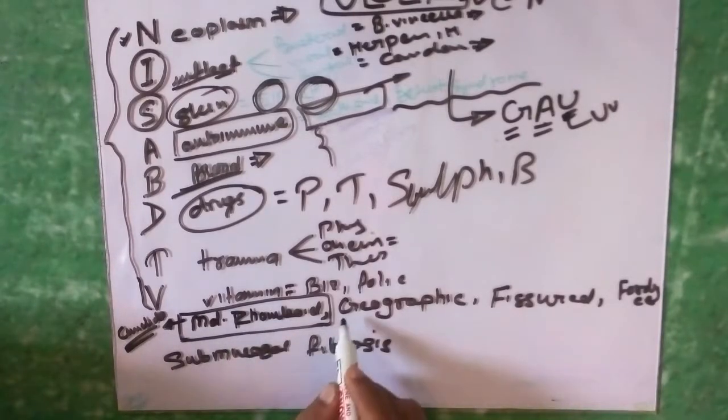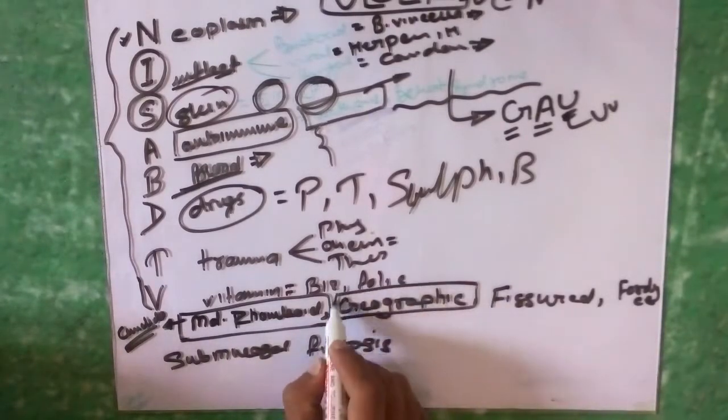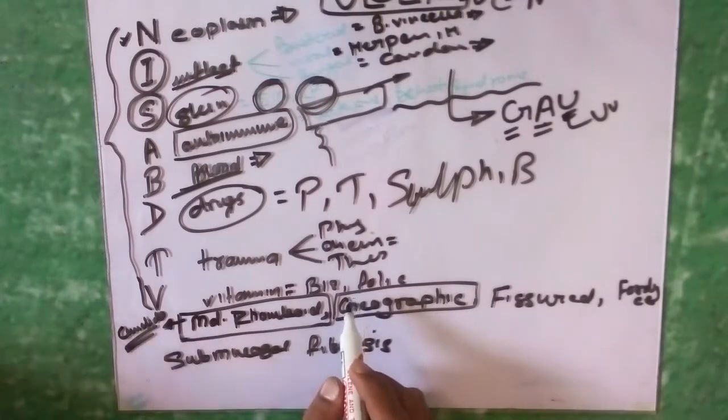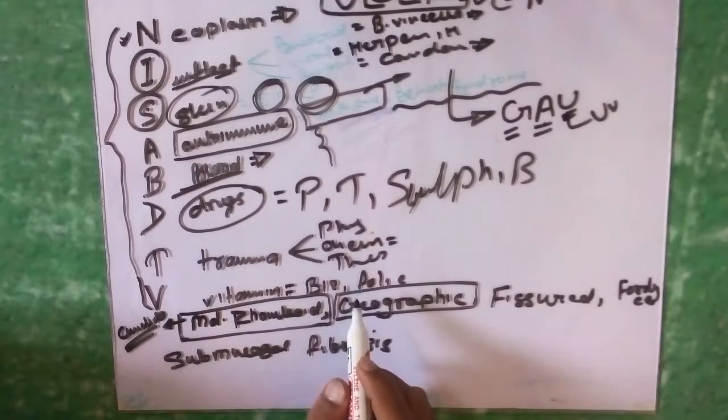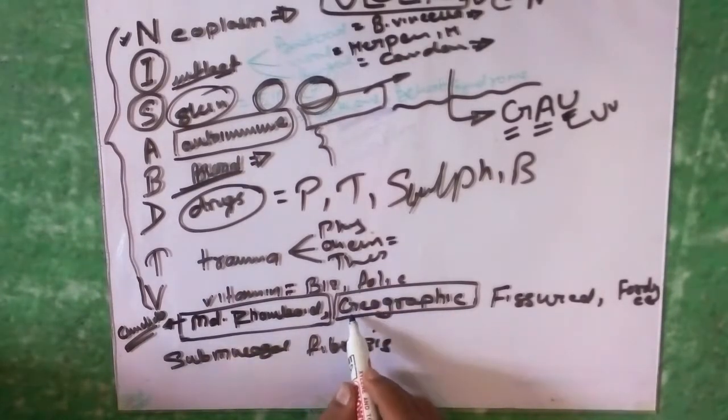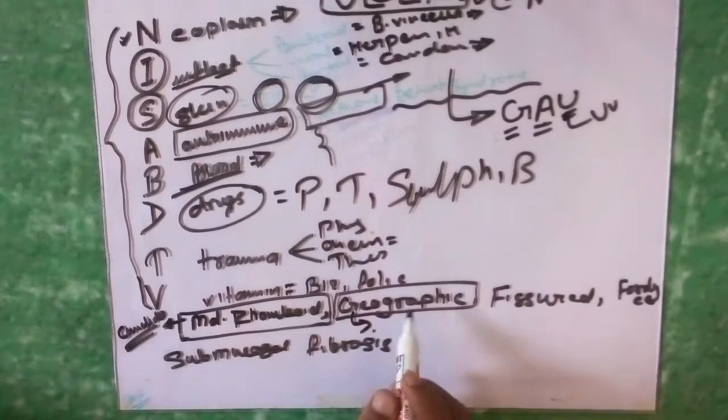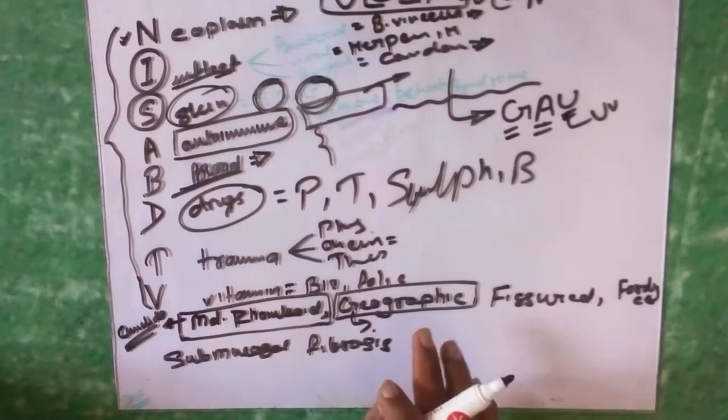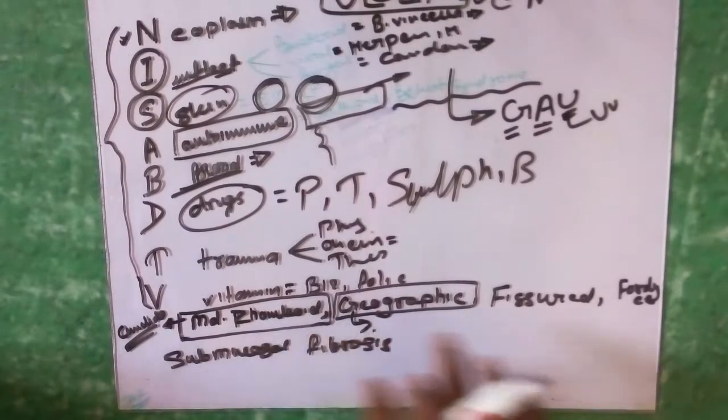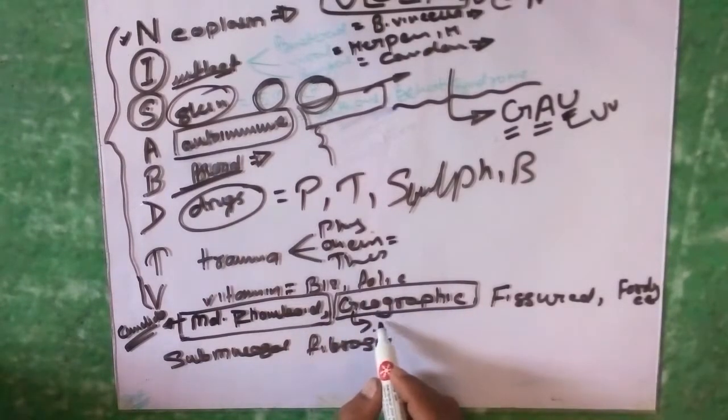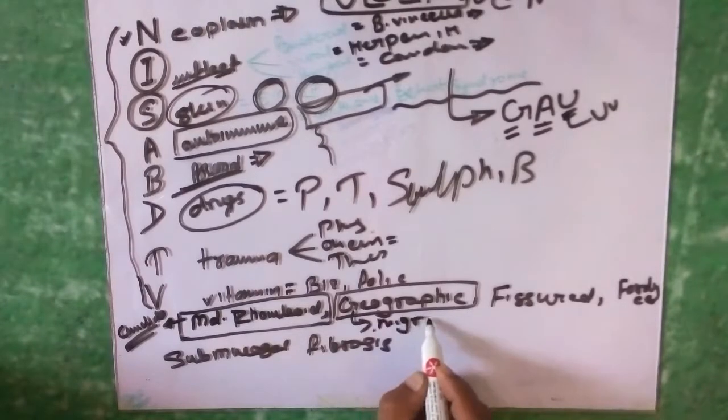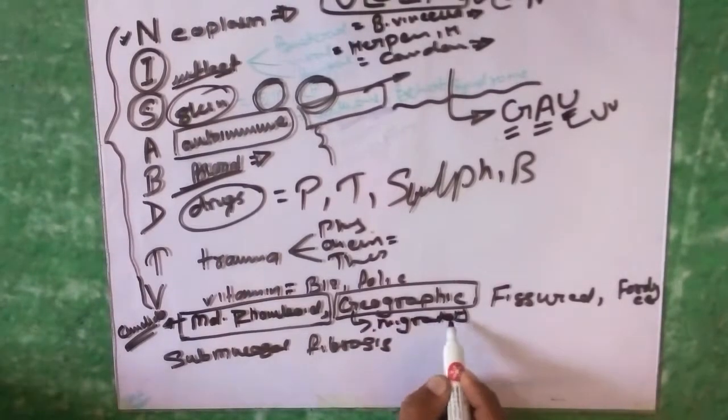Candida is supposed to be associated with median rhomboid tongue. Geographic tongue causes erythematous areas on the tongue in which there is absence of papillae. The condition does not remain stable at one place, it usually migrates.